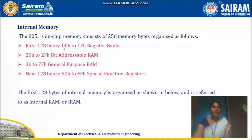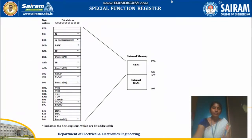Register bank address stands from 00H to 1FH. Bit addressable area stands from 20H to 2FH. General purpose RAM stands from 30H to 7FH. Special function registers are the next 128 bytes, from 80H to FFH. The first 128 bytes of internal memory is organized as shown and is referred to as internal RAM.